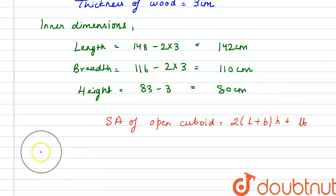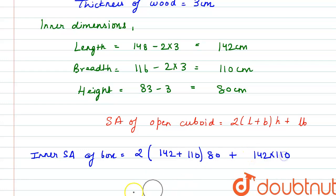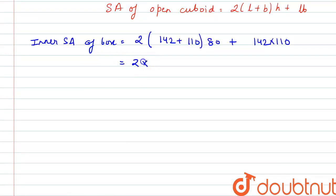So by putting the values, we have the inner surface area of the box as twice into L is 142 plus B is 110 into H is 80 plus L is 142 multiplied by B is 110. So on calculating this, we have 2 multiplied by 252 multiplied by 80 plus 142 multiplied by 110. So this gives us the total value as 55940 centimeter square.